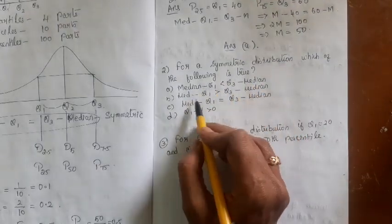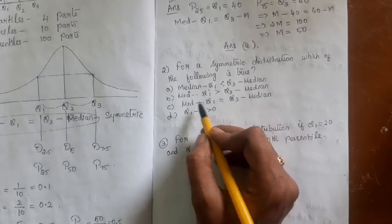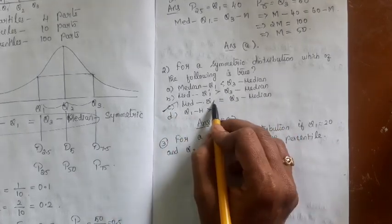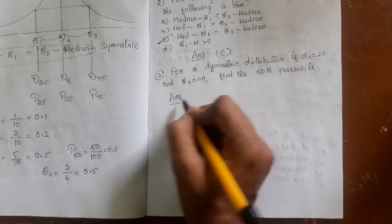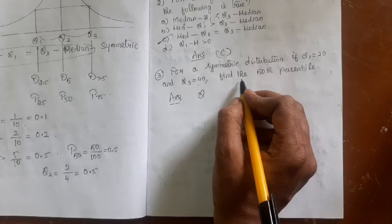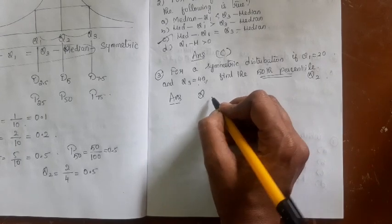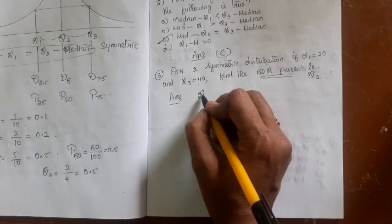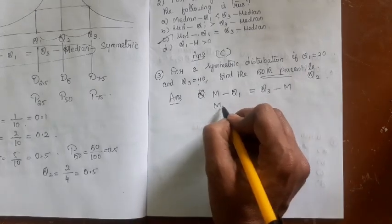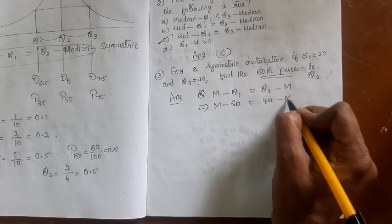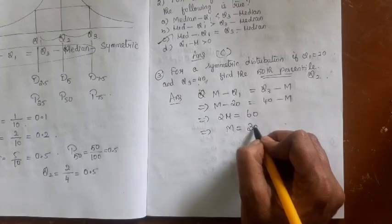For a symmetric distribution, which of the following is true? The correct statement is: median minus Q1 equals Q3 minus median — option C. Next problem: For a symmetric distribution with Q1 = 20 and Q3 = 40, find the 50th percentile. The 50th percentile is the median. Using the symmetry equation: median minus 20 equals 40 minus median, so 2·median = 60, giving median = 30.